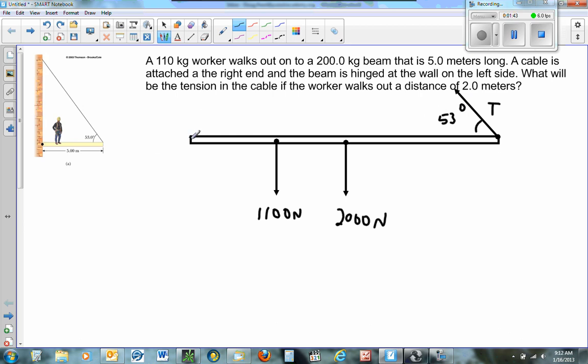And the pivot's right here. We want to know the distance from the pivot to the worker, that was given. We want to know the distance from the pivot to the weight of the beam, that can be figured out. The distance here is 2 meters. The beam is going to act at half of 5, so it would be 2.5 meters. And this is 5 meters all the way to the end.